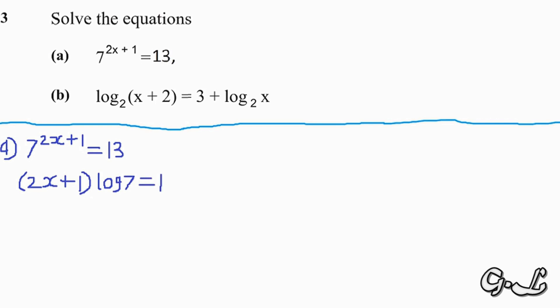So the left hand side becomes open bracket 2x plus 1 close bracket times log 7, and the right hand side becomes log 13. Our main target is to find the value of x, so we divide both sides of the equation by log 7.